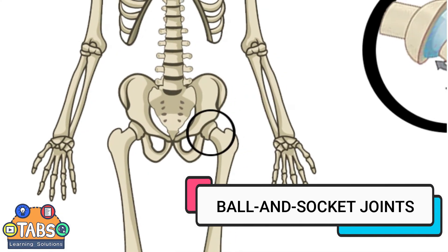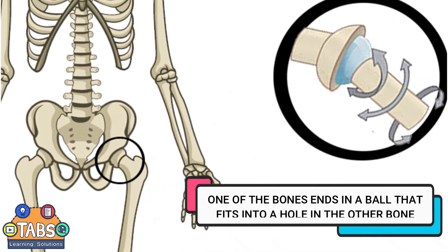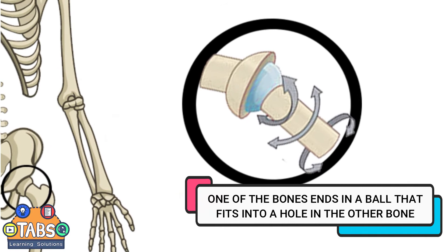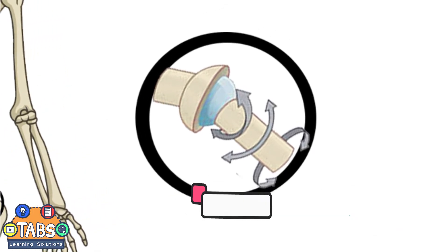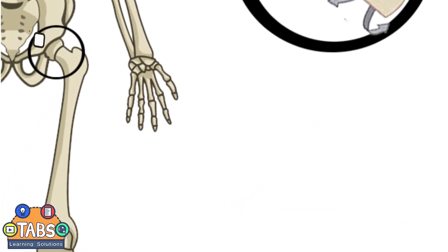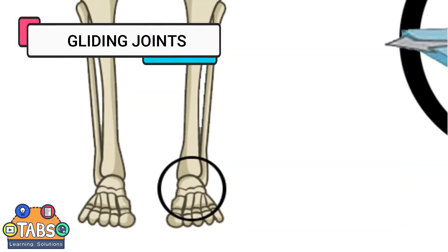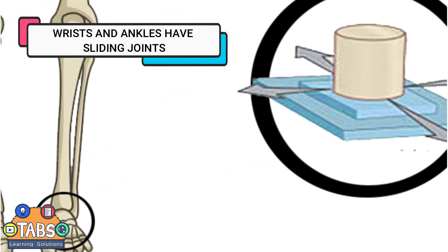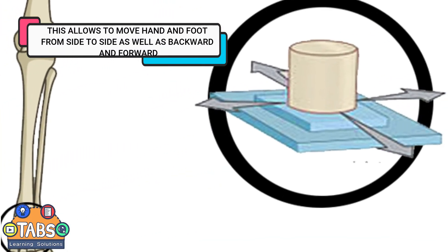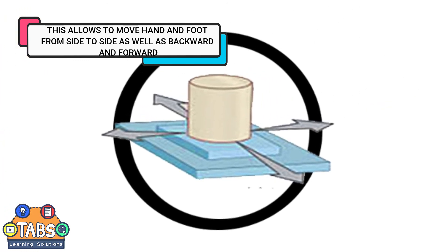Ball and socket joints. One of the bones ends in a ball that fits into a hole in the other bone. Gliding joints. Wrists and ankles have gliding joints. This allows the hand and foot to move from side to side as well as backward and forward.